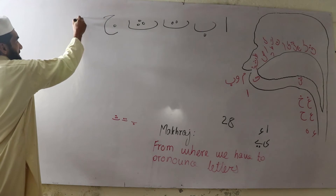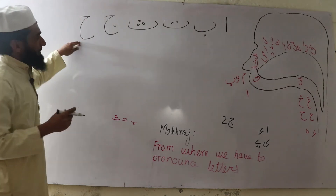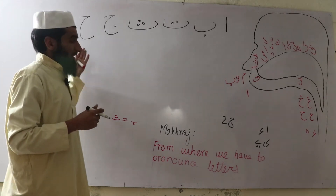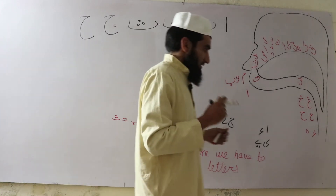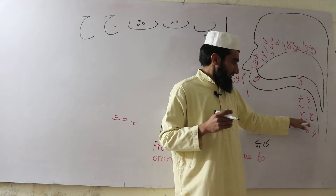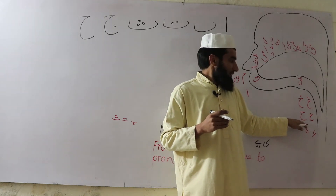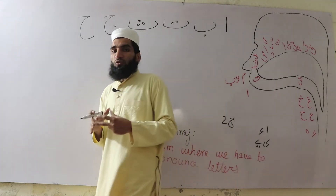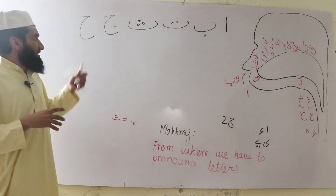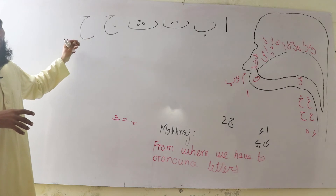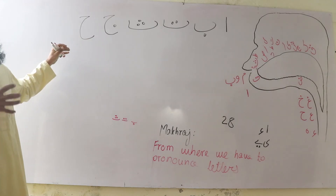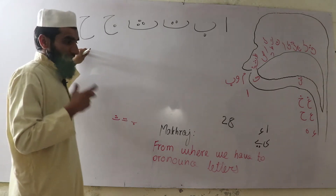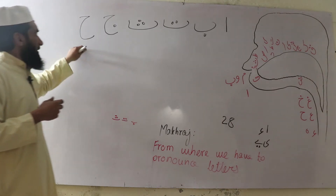Next is Ha. Ha is empty from any dot. It is a throat letter from the mid of the throat. We enclose our throat while pronouncing it — very light and soft: Ha.